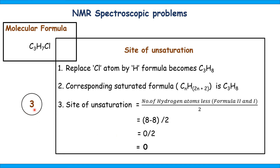Example 3: the molecular formula is C₃H₇Cl. A halogen atom is present, so replace the chlorine atom by a hydrogen atom. The formula becomes C₃H₈. The corresponding saturated formula for three carbon atoms is also C₃H₈. The site of unsaturation equals 0 divided by 2, equal to 0. The compound is saturated and acyclic in nature.